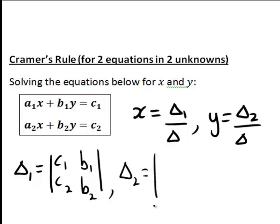Delta2 then has the coefficients of the first unknown x in the first column, so a1, a2, and it has the constants c1, c2 in the second column.